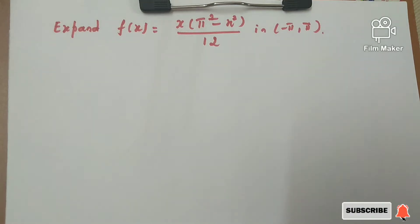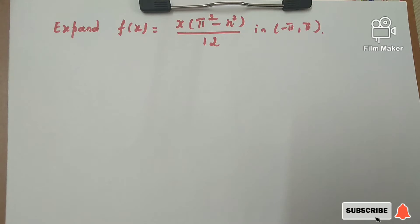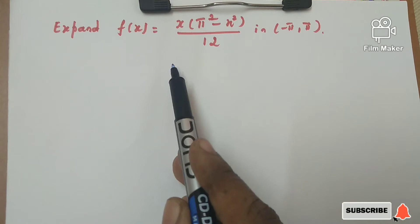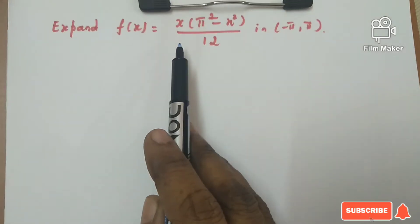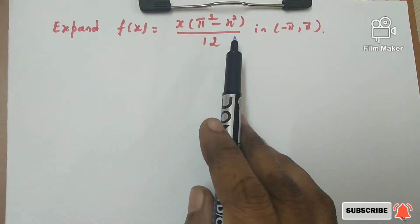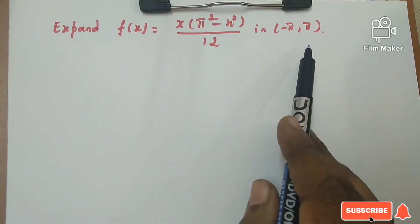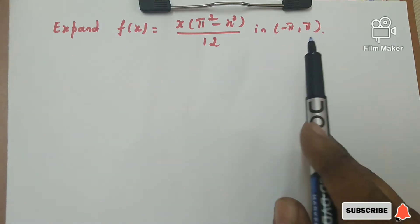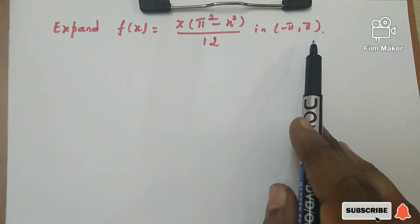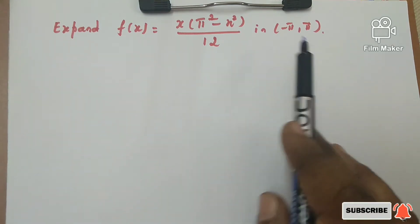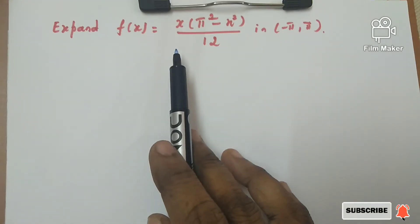In this video, we are going to see a problem under Fourier series. In that too, we are discussing about odd and even function cases. Look at this question: f(x) = x(π² - x²)/12 in the interval minus π to π. That is why we are checking for the odd and even cases.